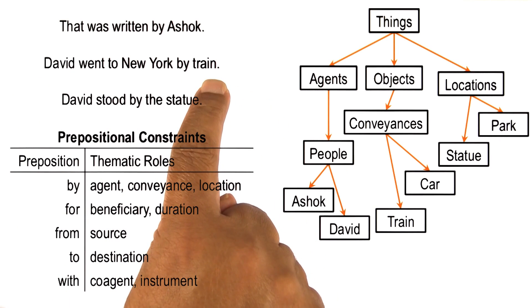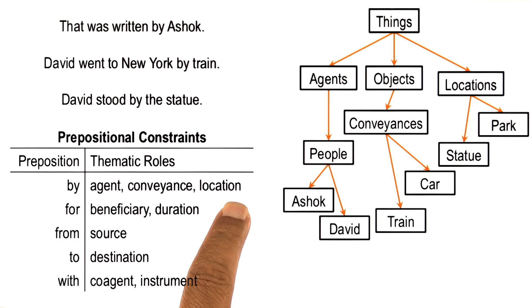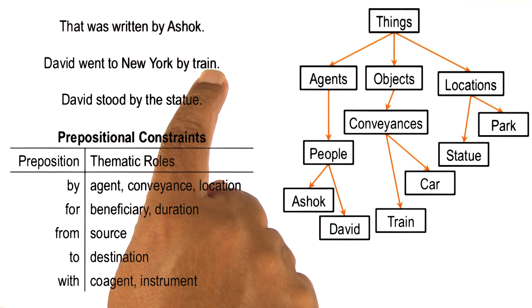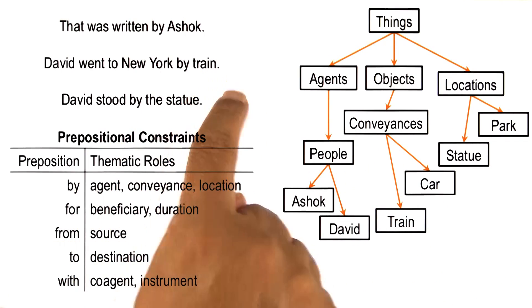Similarly, this second sentence, train can be an agent, conveyance, or location. Let's look at our ontology, but train is a conveyance. So now we know that train is a conveyance. Similarly for statue, statue in this case specifies a location.